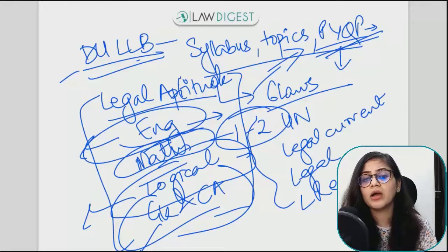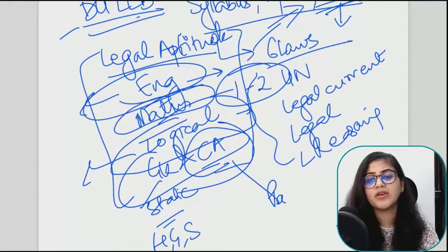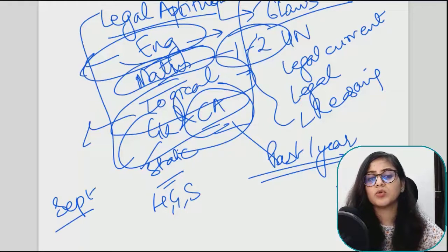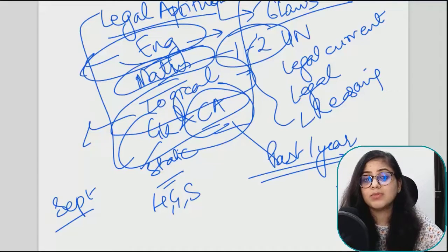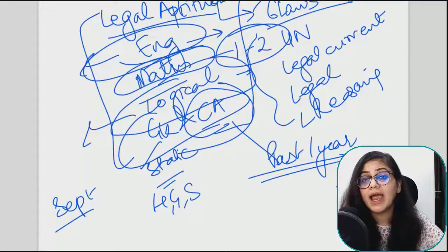For GK and Current Affairs — GK refers to static GK, with questions from history, geography, and science. For current affairs, I would say you should do current affairs of the past one year. You can start from around September, but it is advisable to cover a few months before that too, because sometimes past months have important topics that can be asked. So cover current affairs for the past one year.